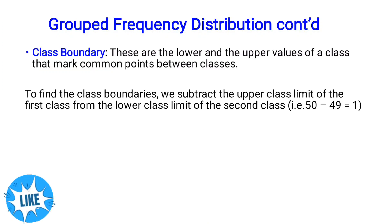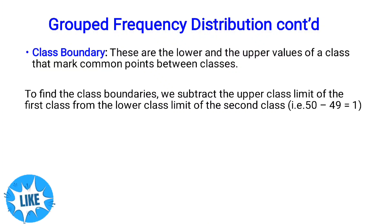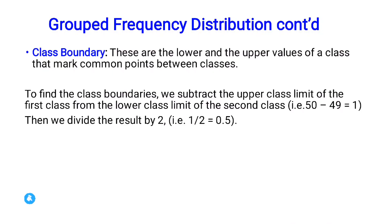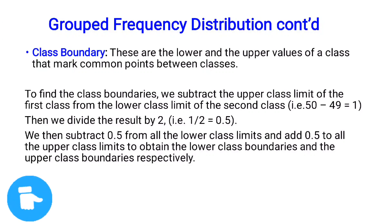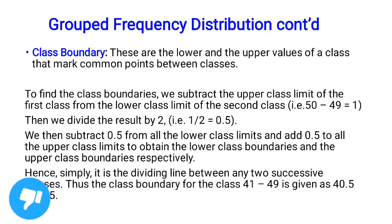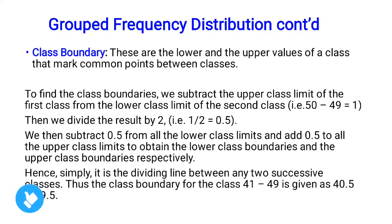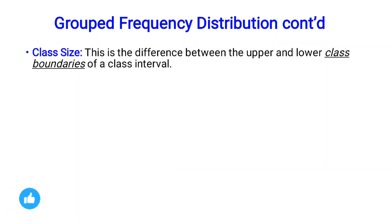To summarize finding class boundaries: subtract the upper class limit of the first class from the lower class limit of the second class, divide the result by 2, then subtract 0.5 from the lower class limit and add 0.5 to the upper class limit to obtain the lower class boundary and upper class boundary respectively. This effectively divides the line between any two successive classes.